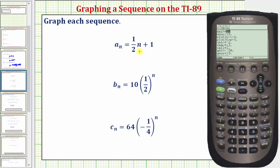The n minimum is one, which is fine. The n max is ten, which means for these settings we'll graph the first ten terms, which again is fine. We'll leave the plot start and plot step at one.